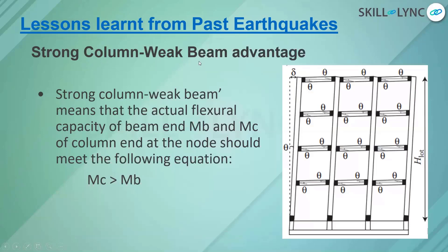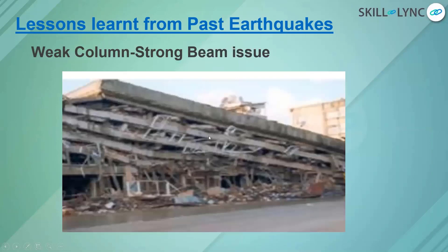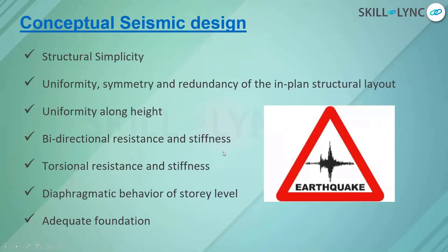The strong column–weak beam concept is the correct approach. If we design a building with strong columns and comparatively weaker beams, the beams will fail first, impacting only the corresponding floor level and not the entire building. So the building is safer than the earlier case. With this concept, plastic hinges will develop in the beams only, but the building will not collapse. The right sizing of beams and columns needs to be carefully considered.